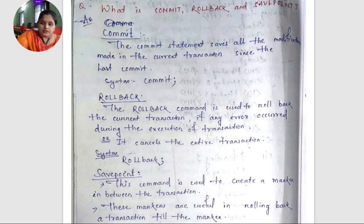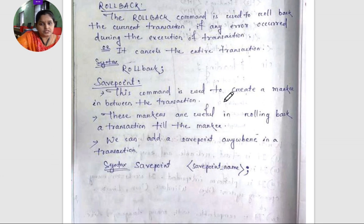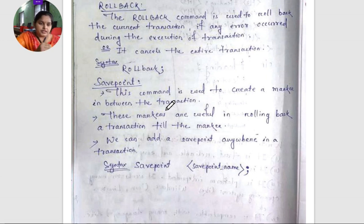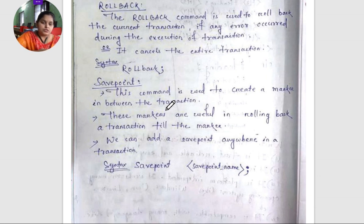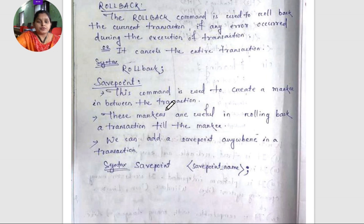The SAVEPOINT command is used to create a marker in between a transaction. For example, if we are writing ten queries and manipulating data in different ways, we can place markers. These markers are useful in rolling back a transaction only up to the marker point.